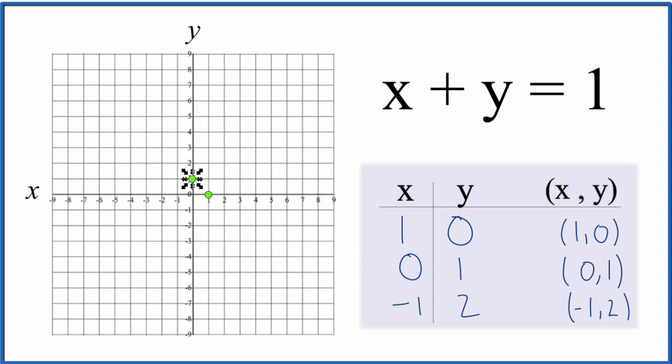And finally, when we have a negative 1x, y will be 2. So we have negative 1x and go 1, 2 up to y. And you can see we have our line there.